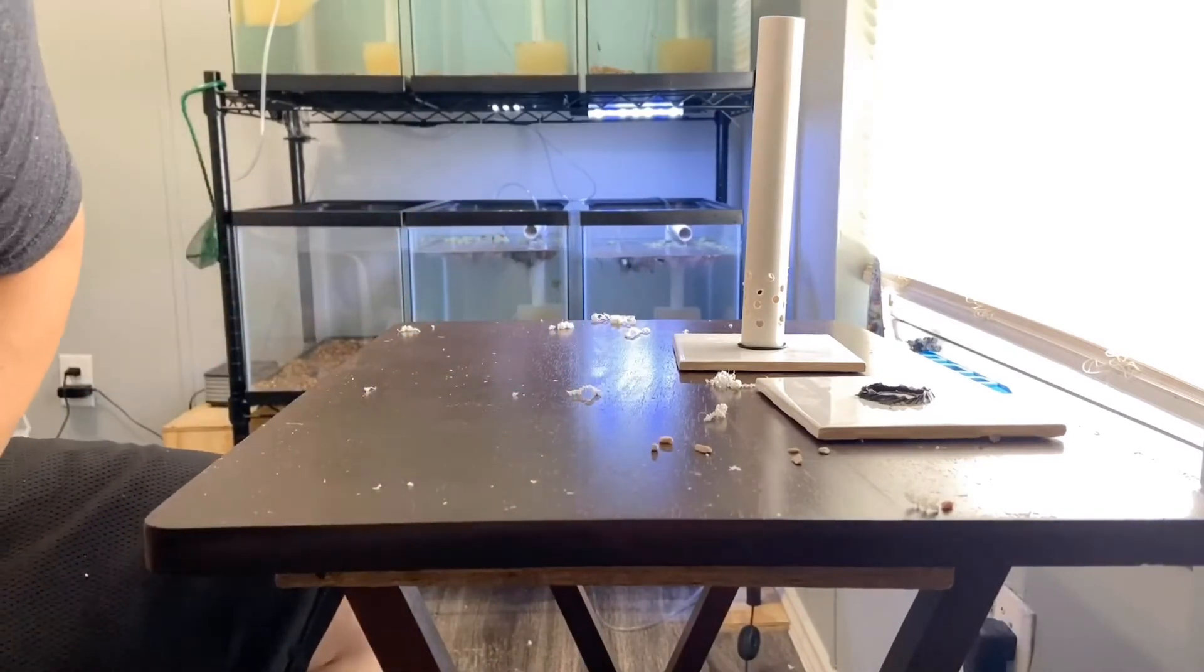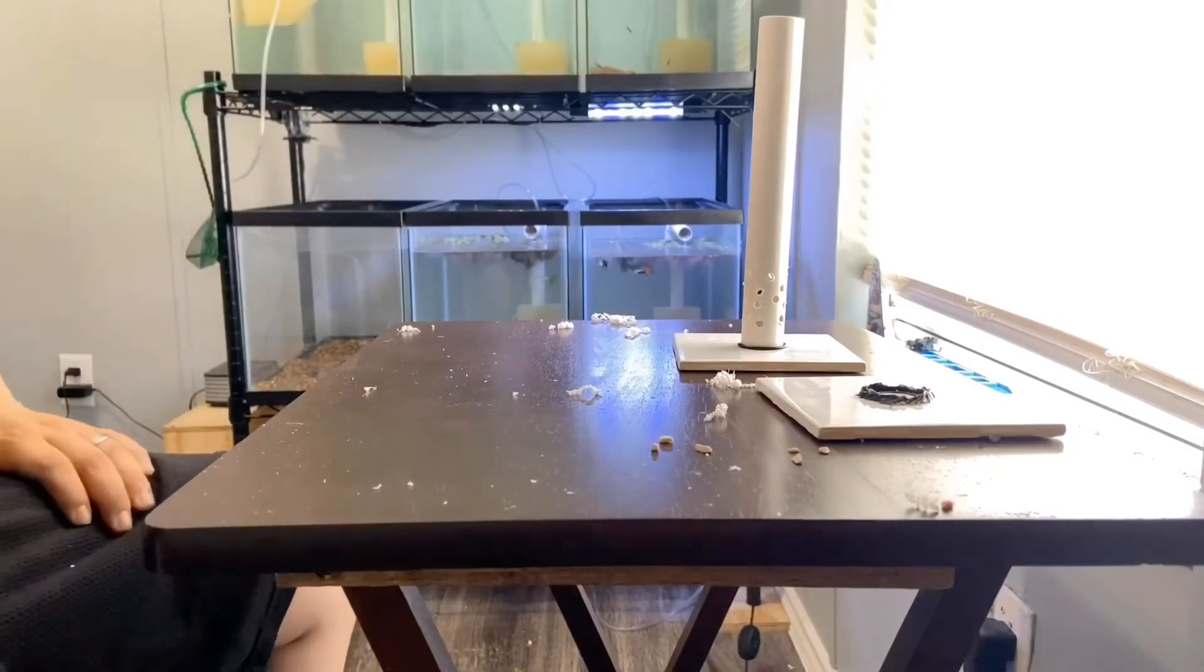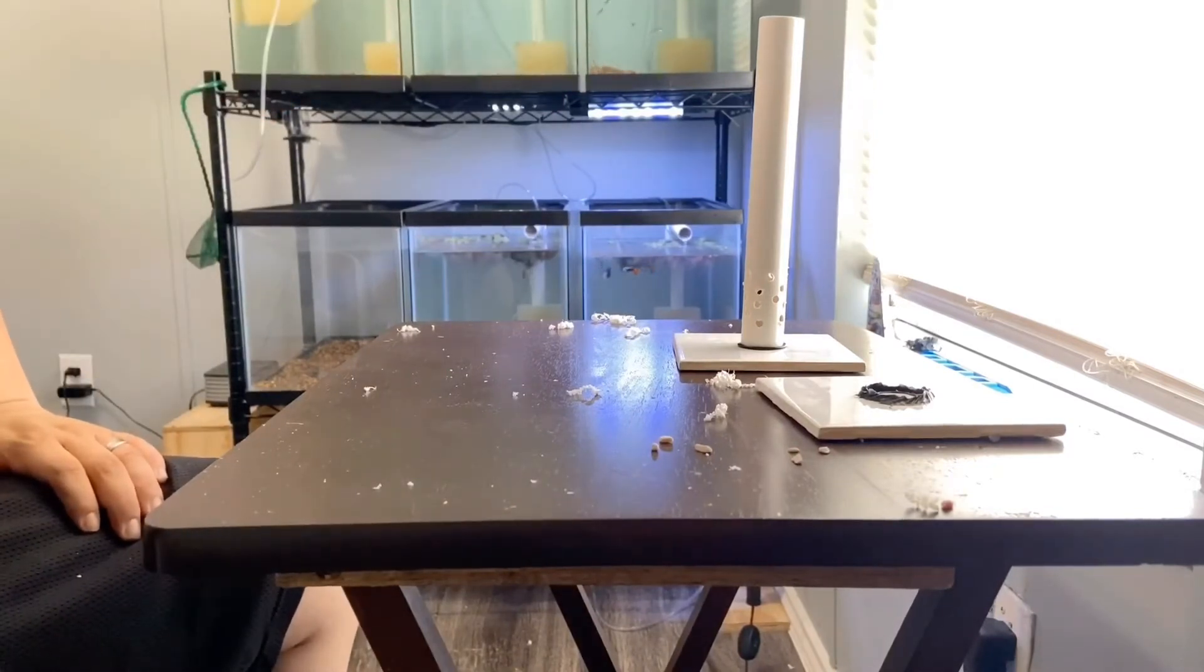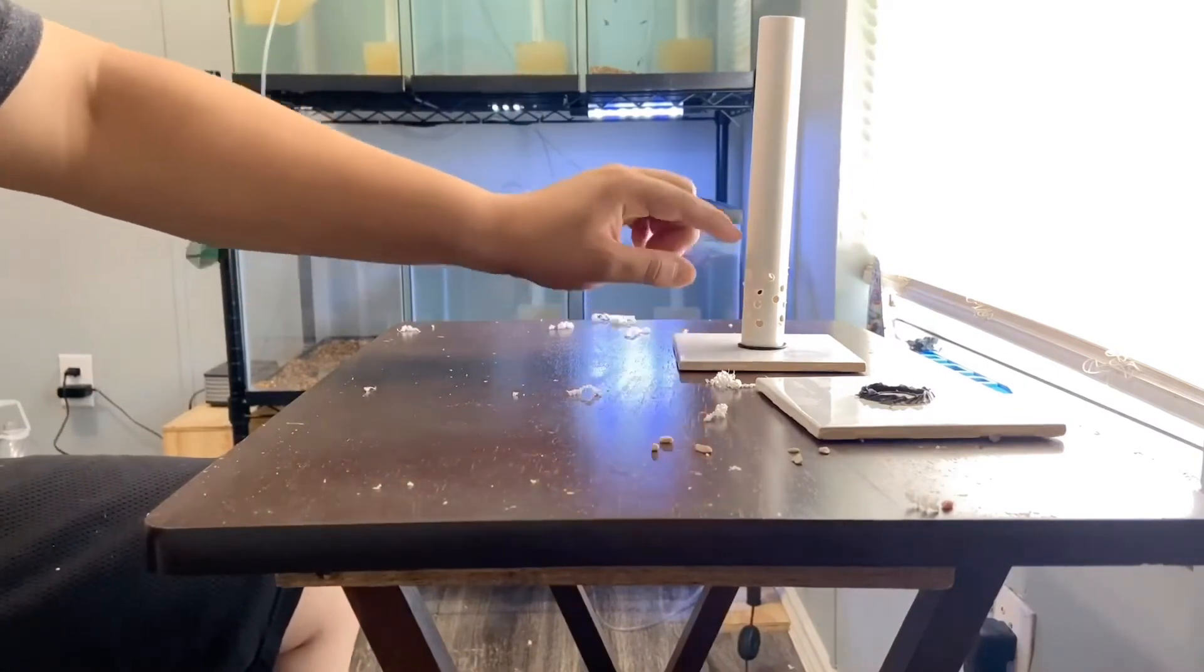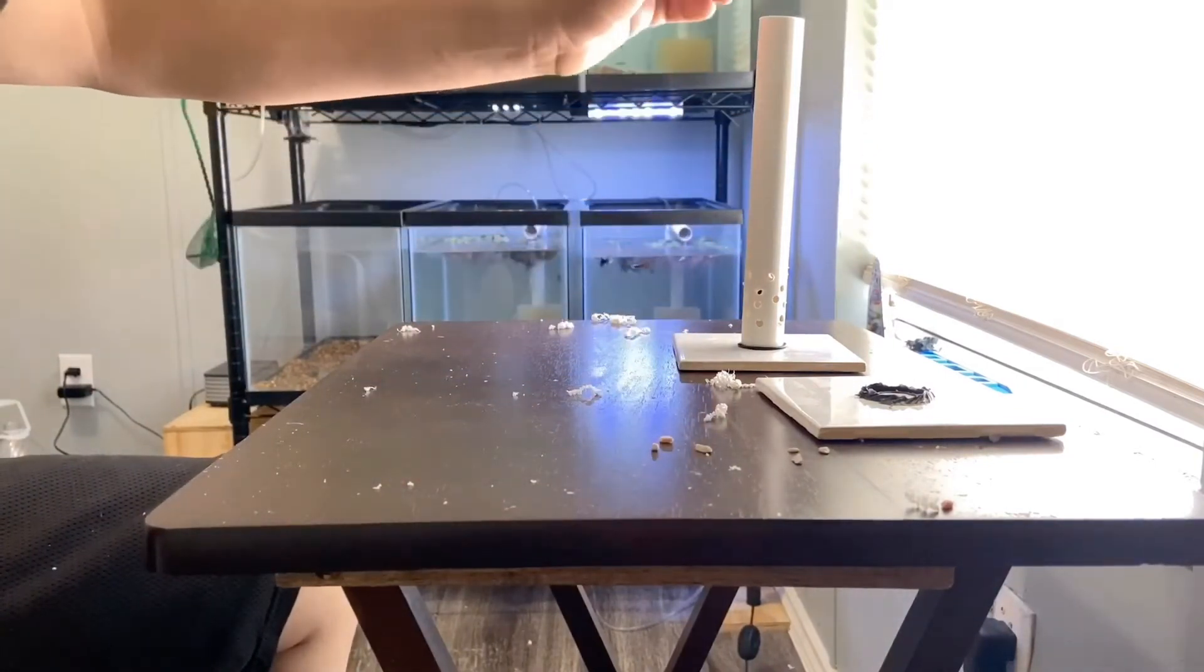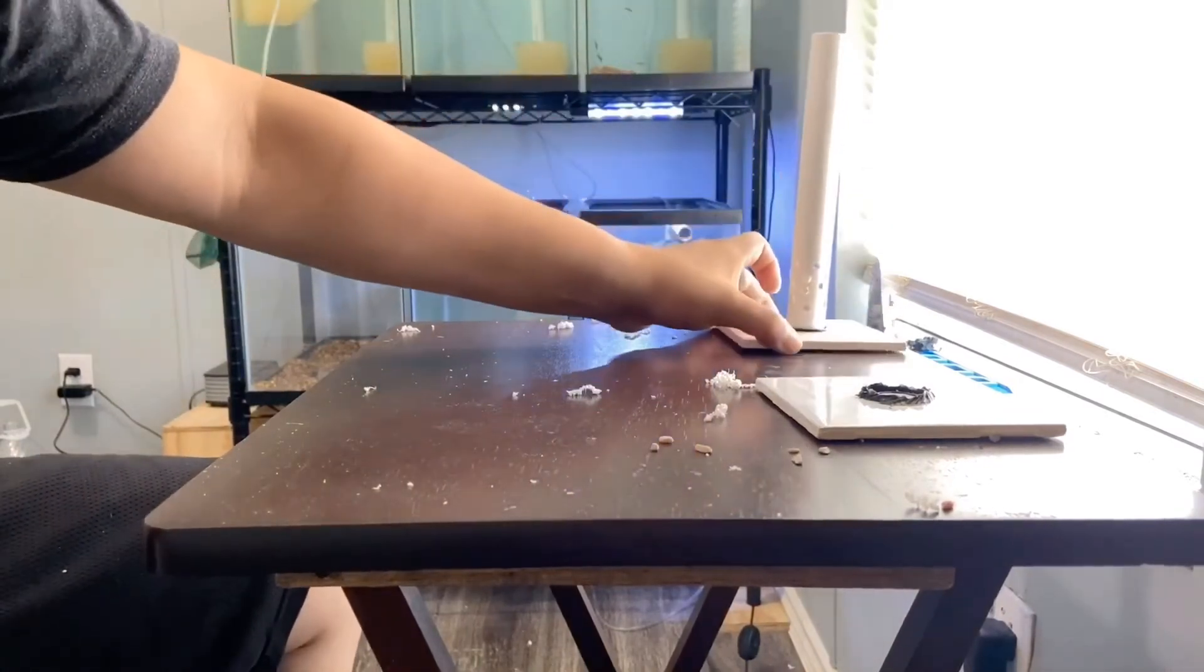And you just fit your air stone in with your 90 degree elbow, and boom, that's all. You have your sponges on there already. It sucks water in, brings water at the top using the force of the bubbles, and that's it.